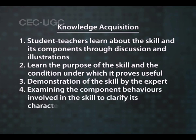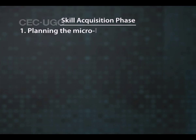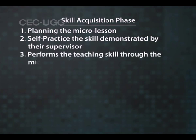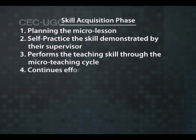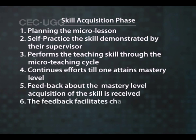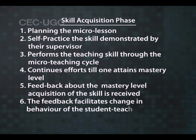In the skill acquisition phase, student teachers undergo the following: planning the micro lesson; self-practice of the skill demonstrated by their supervisor; performing the teaching skill through the micro-teaching cycle; continuous efforts until one attains mastery level; feedback about the mastery level acquisition of the skill is received; and the feedback facilitates change in behavior of the student teacher in the desired direction.